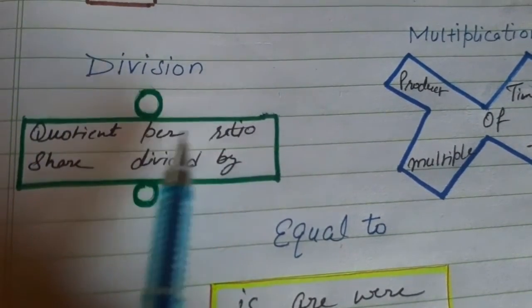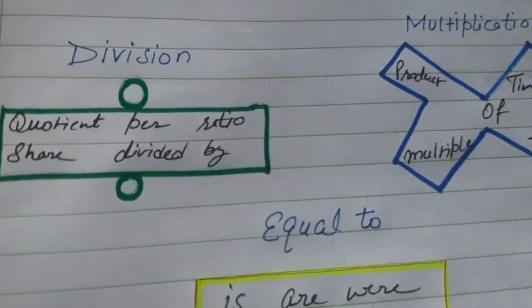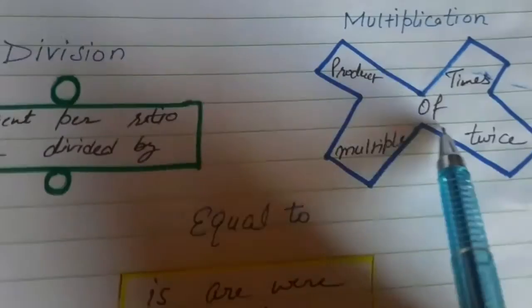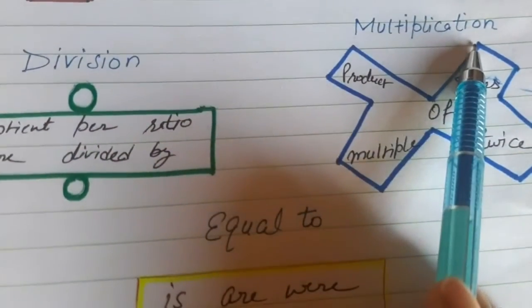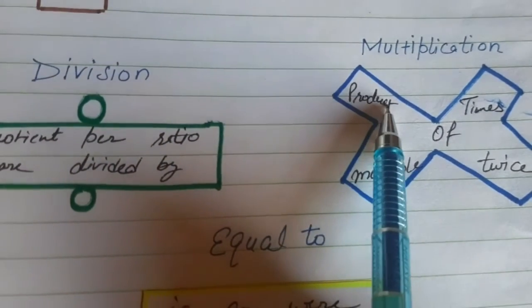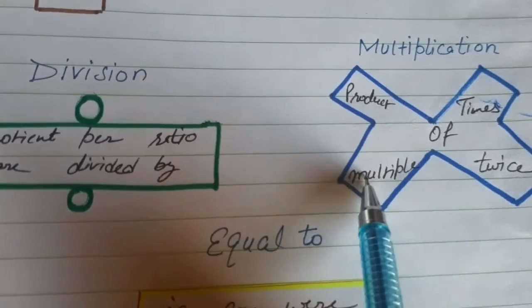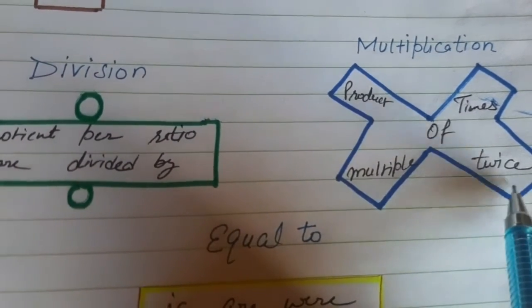Quotient, per, ratio - whenever you are finding these keywords you have to divide in the given question. Next is multiplication. When you have to multiply, the keywords are product, times, of, multiple, or twice.